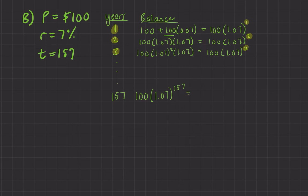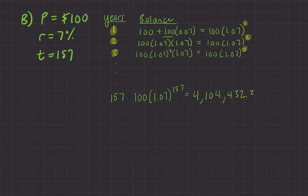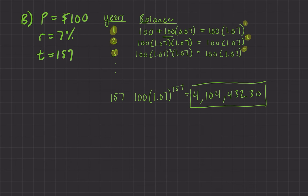And this is a lot bigger than the $1,099 we got with simple interest. The compound result is $4,104,432.30. This growth is so much greater than simple interest that it's striking.